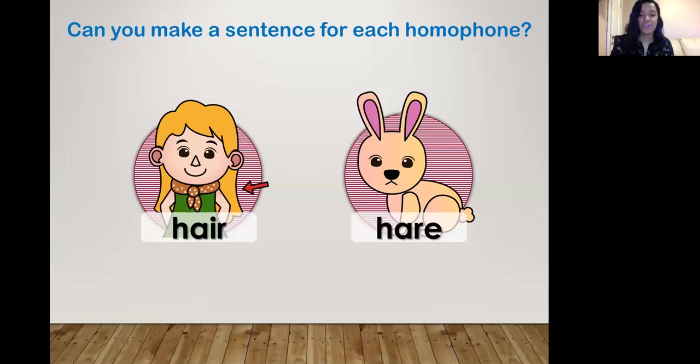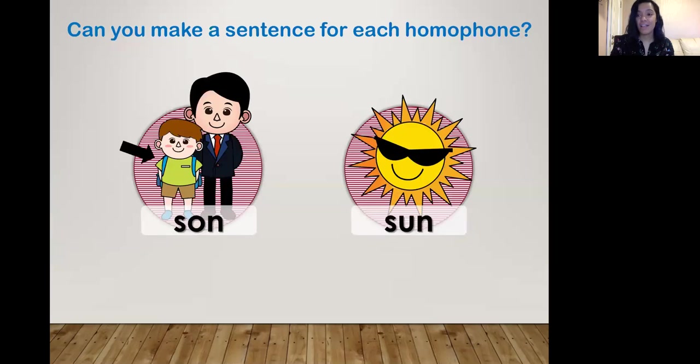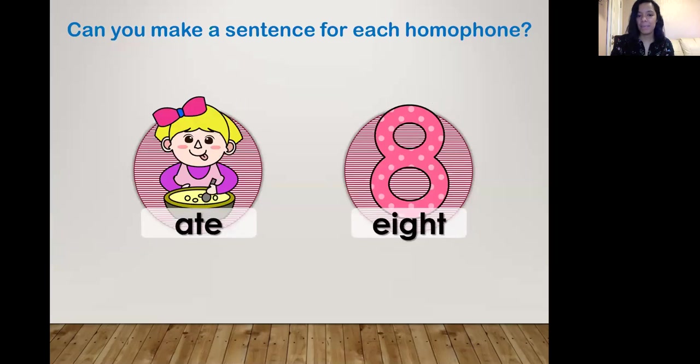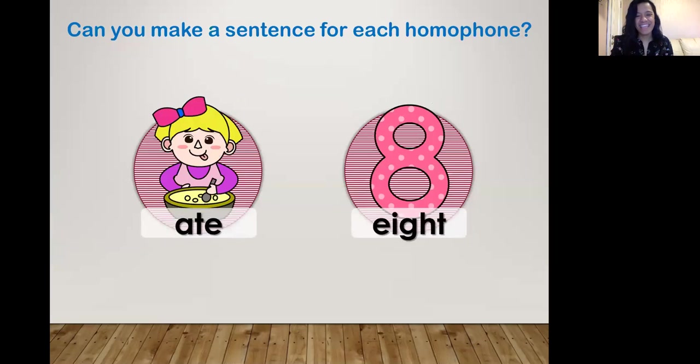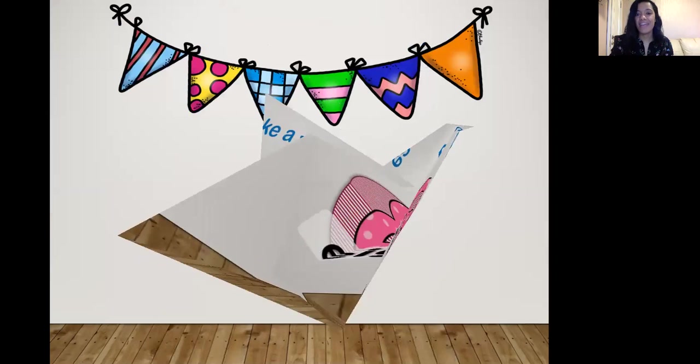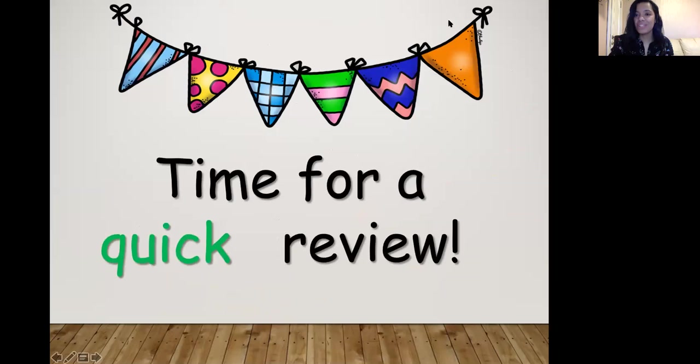Excellent. So you can make a sentence for hair and hare, pear and pair, sun and son, peak, peek. Peak means the top of the mountain. Top of the mountain. And then we have peek as in peekaboo. We have ate and eight, and that is it. So that is what you are going to be doing today.